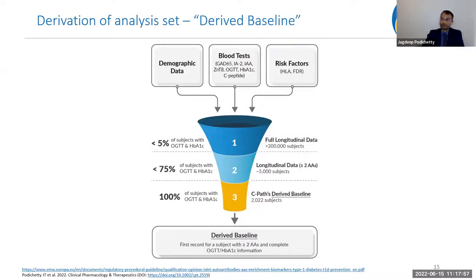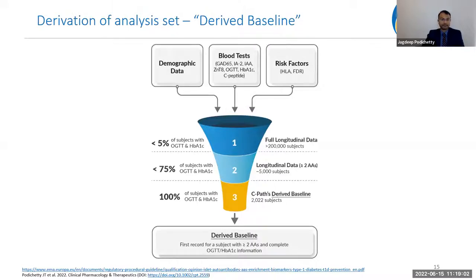JD, Director of Predictive Analytics at the Critical Path Institute, explains the data curation and modeling analysis. The datasets used — TN01, TEDDY, and TrialNet — included demographic data, blood test results, and risk factor information. The data curation aimed to derive a baseline aligned with the context of use: specifically the first record of a subject with two or more autoantibodies and complete OGTT and HbA1c information.